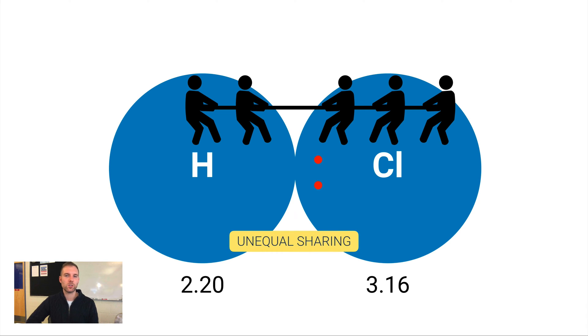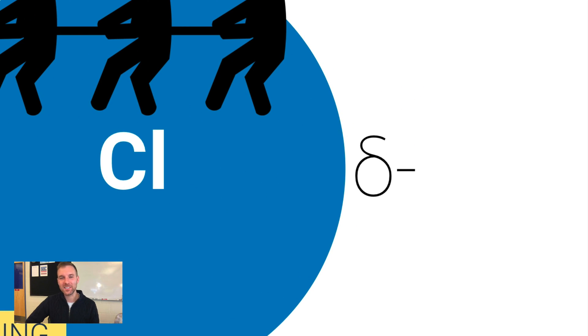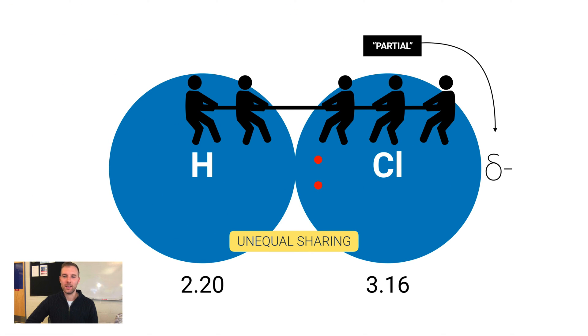That means unequal sharing of those electrons. Because these red electrons here are negative, that means that chlorine is going to be the side that develops a partial negative charge. Now that symbol there is weird looking—that is a lowercase delta. A lowercase delta means in this context partial, so we wouldn't put just a minus sign on that side. That would imply a full negative charge. We'd put this delta lowercase delta symbol to imply that it's just a partial negative charge.